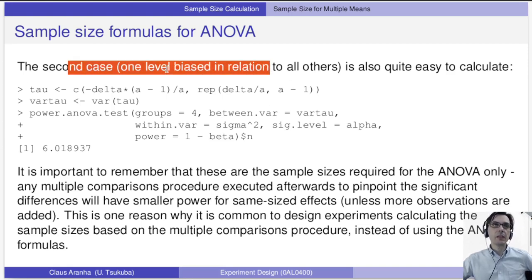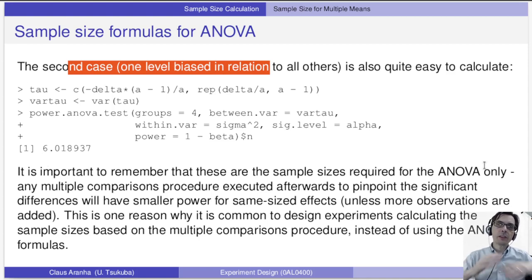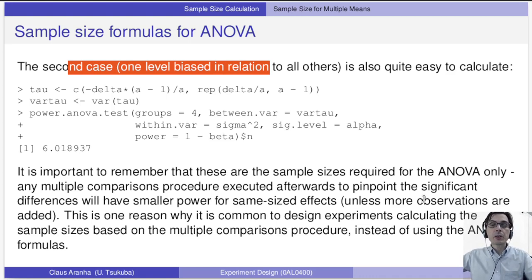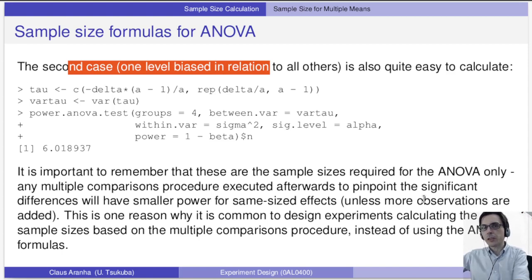In the second scenario — one level biased relative to all others — we need fewer observations: only 7 per group. Note that this sample size calculation is for the ANOVA only. After the ANOVA, we still want to do pairwise post-hoc tests with alpha correction. Post-hoc pair tests usually require more observations, and since we can use the same observations for both the ANOVA and the post-hoc tests, we usually want to focus the sample size calculations on the post-hoc pairwise tests, which is where the bulk of observations go.